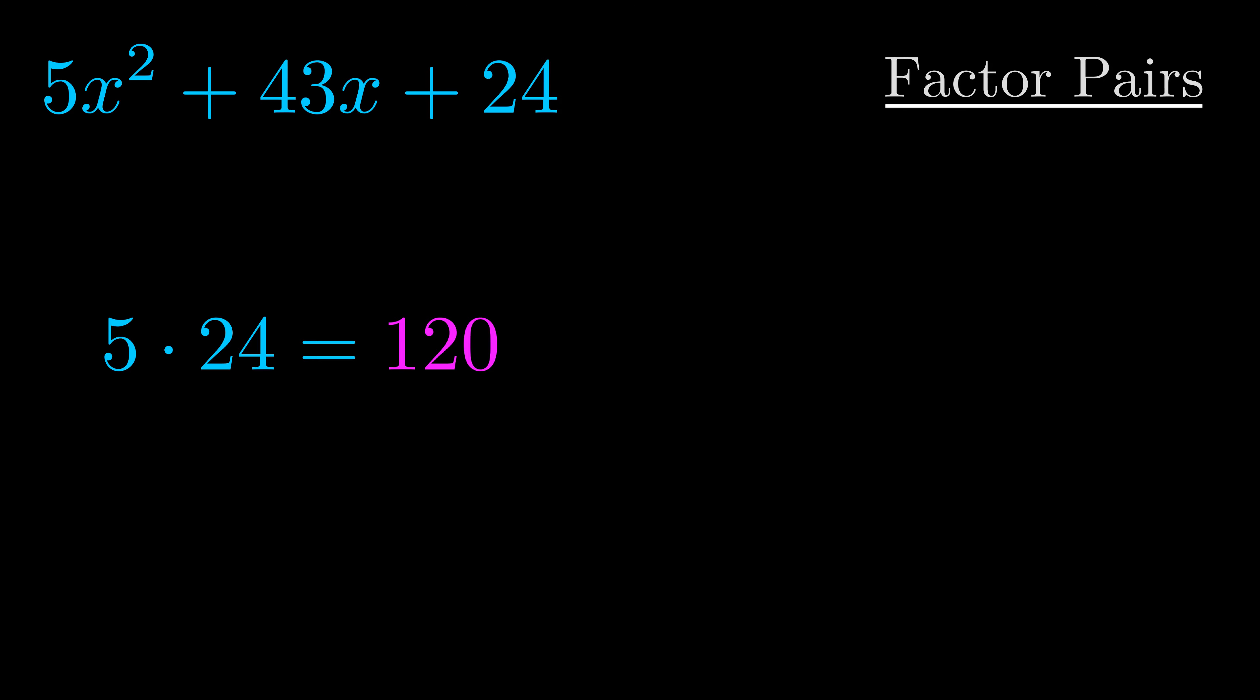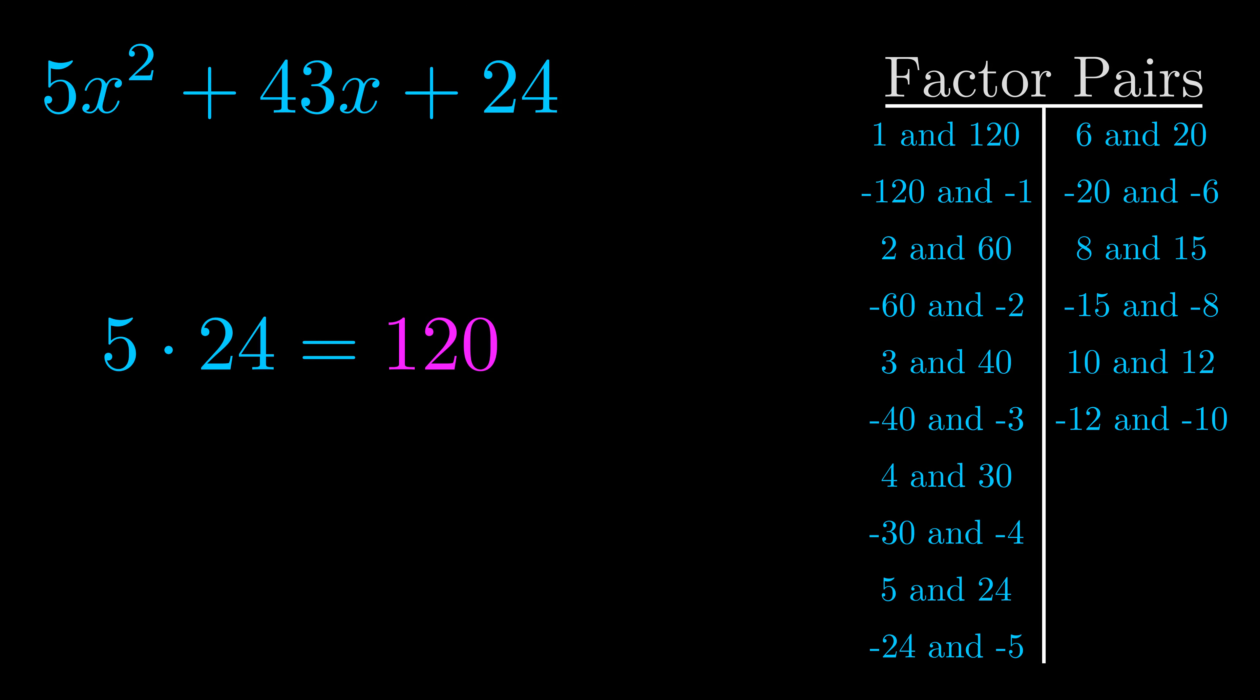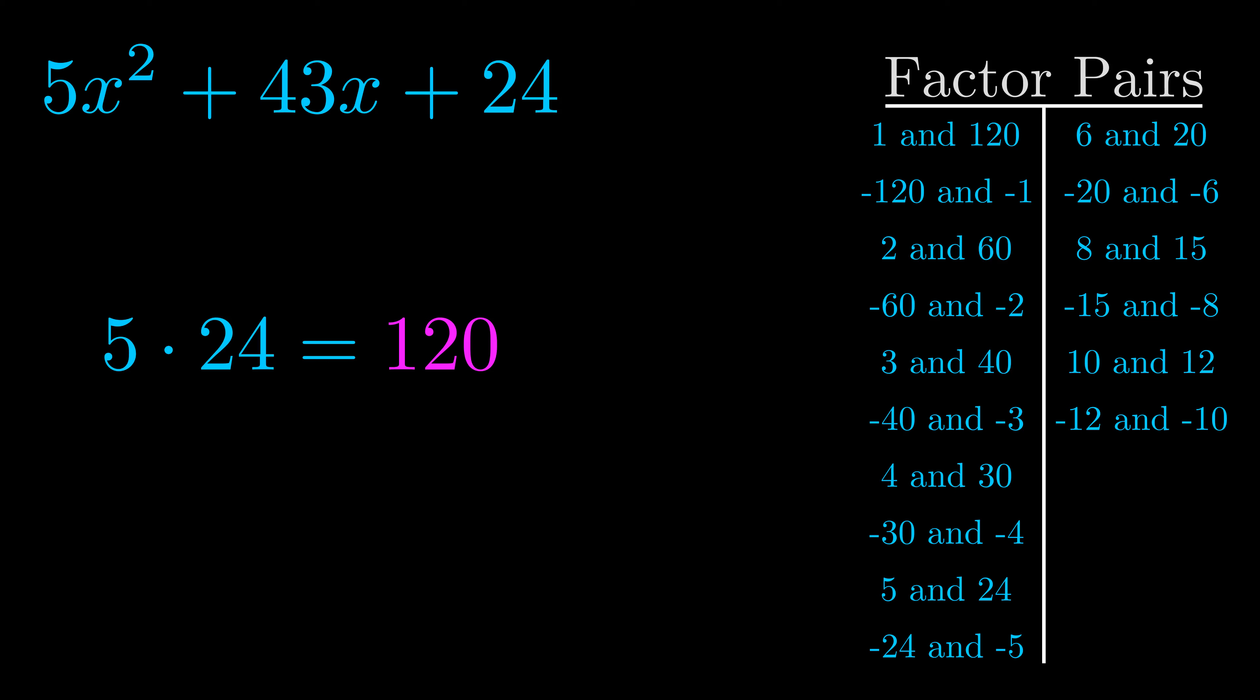Okay here's what I came up with. Now once you have these factor pairs, the goal is to find which of these pairs adds to the b value. The b value is the coefficient on the x term. That's the middle term, the one that we haven't done anything with yet. And really this is the only factor pair that we need.